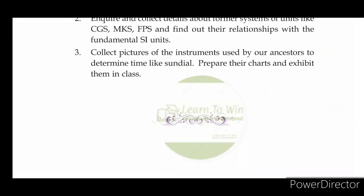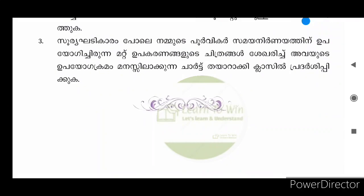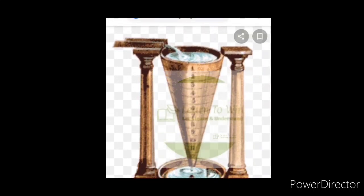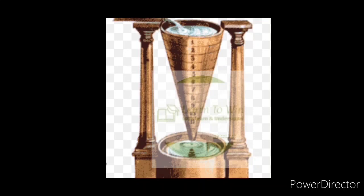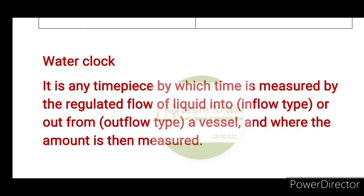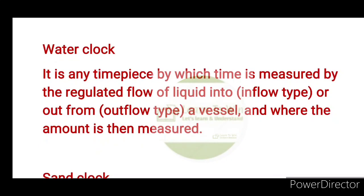Collect pictures of the instruments used by our ancestors to determine time, like the sundial. Prepare charts and exhibit them in the class. One such instrument is the water clock — it is a timepiece by which time is measured by the regulated flow of liquid into or out from a vessel, and the amount is then measured.